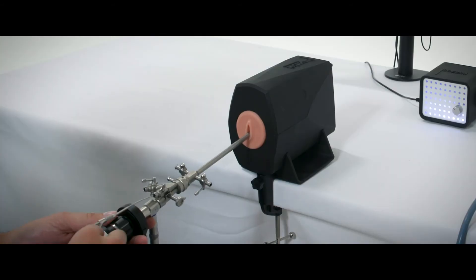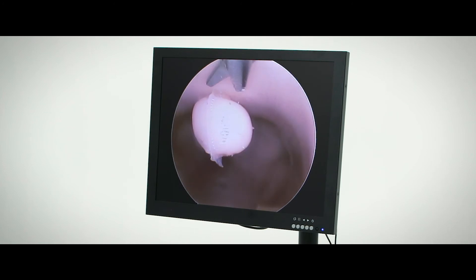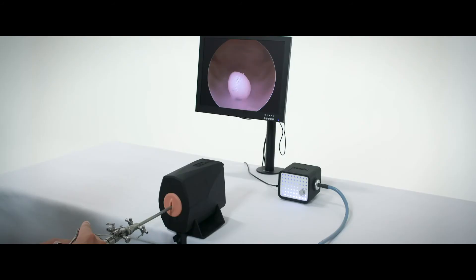We can use the hysteroscopic scissors to dissect out our polyp, and once that's performed we can pop the used polyp out through the side of the uterus through one of the holes and place the next polyp in for the next user to carry out their simulation.